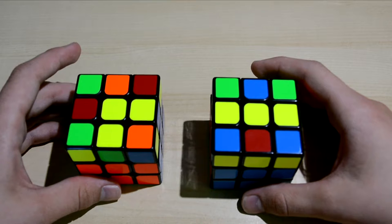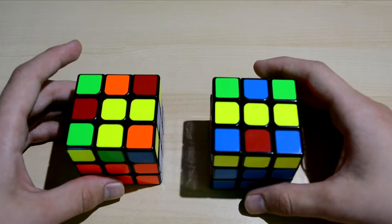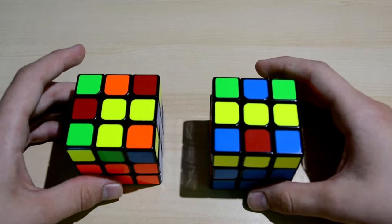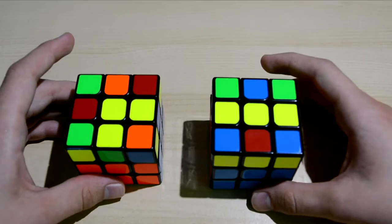If you use two-look OLL, you know you'll have to make a cross first, and that's not really a problem if you have a line or a small L shape, because if you hold the cube correctly, you can just solve it in one iteration.